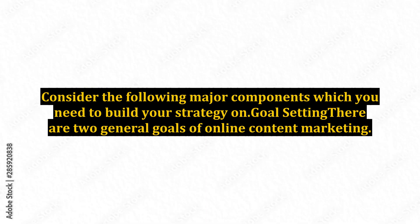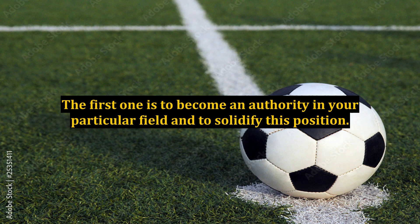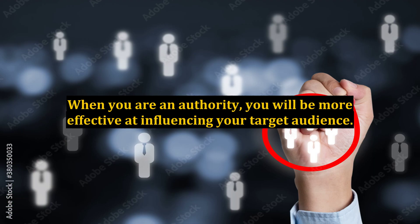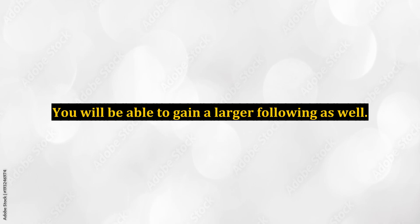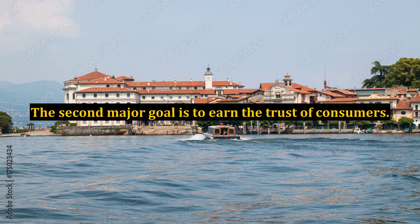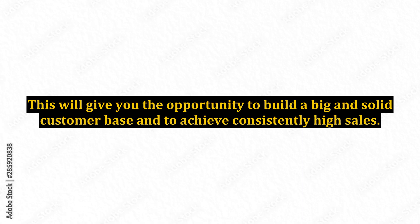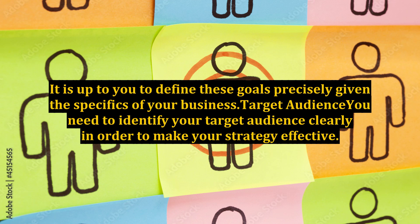Consider the following major components which you need to build your strategy on. Goal setting: there are two general goals of online content marketing. The first one is to become an authority in your particular field and to solidify this position. When you are an authority, you will be more effective at influencing your target audience and will be able to gain a larger following. The second major goal is to earn the trust of consumers, which will give you the opportunity to build a big and solid customer base and to achieve consistently high sales. It is up to you to define these goals precisely given the specifics of your business.